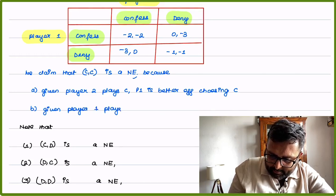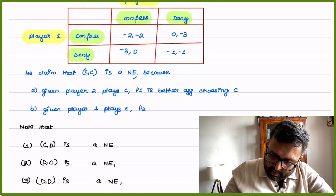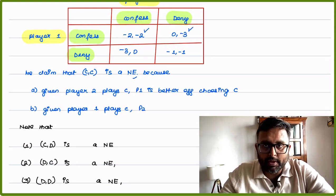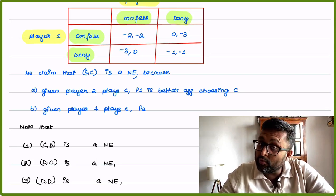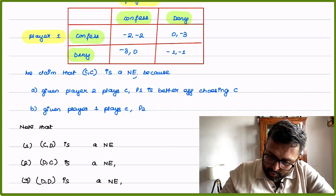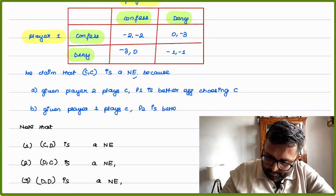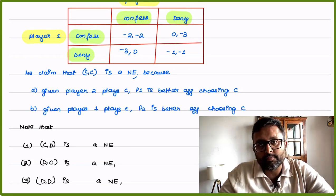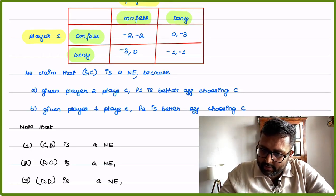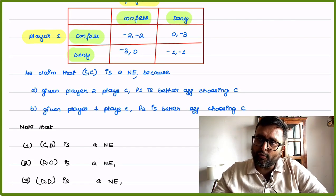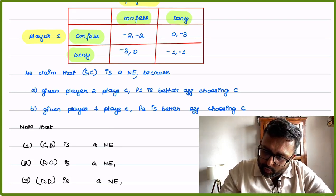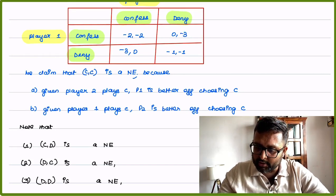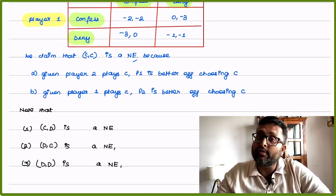Given player 1 confesses, you have a choice between 2 years in jail and 3 years in jail. You will pick 2 years in jail, so you are also better off choosing confess. Do you have any profitable deviation from moving from confess to deny? Do you want to move from 2 years in jail to 3 years in jail? That is not a profitable deviation. Since neither player has a profitable deviation, confess-confess is a Nash Equilibrium.